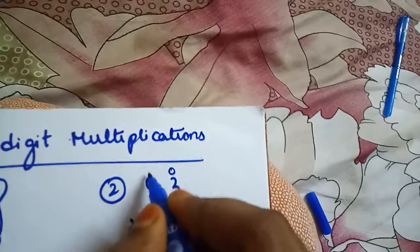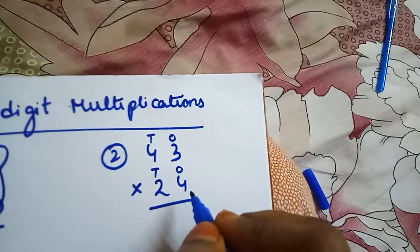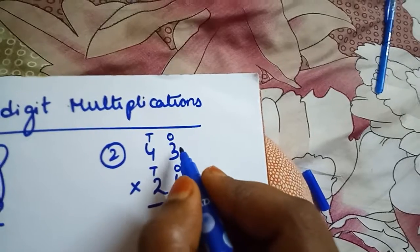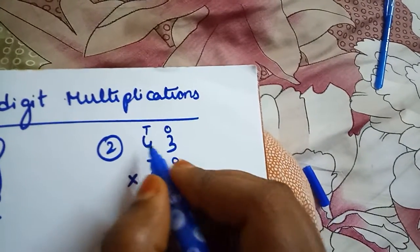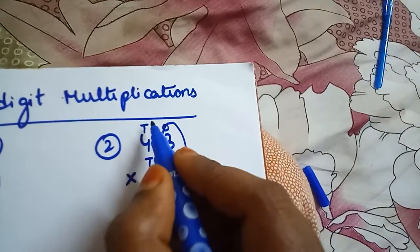Next, see here also write the place values: ones, tens, ones, tens. First of all, multiply ones place with ones place, next ones place with tens place. So multiply ones place with ones place: 4 times 3.